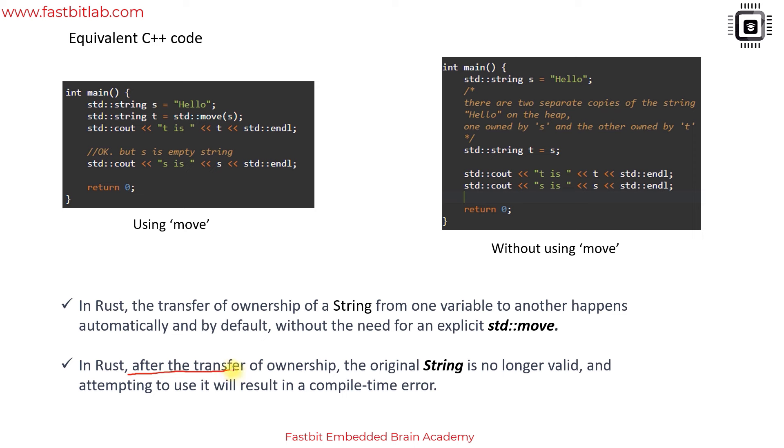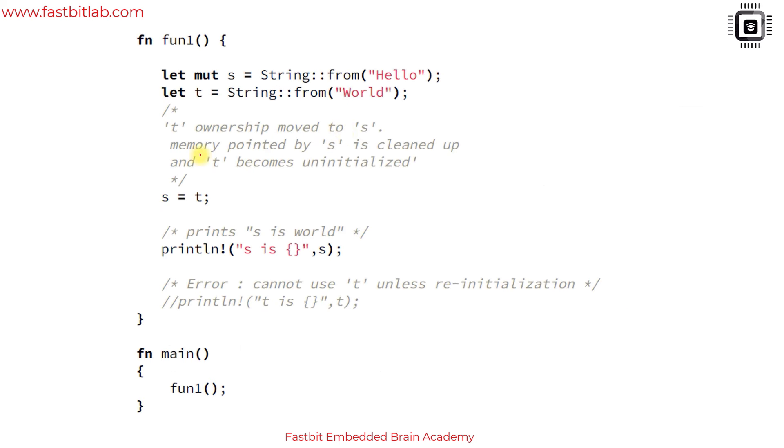In Rust you need not explicitly mention something called move or something like that, it happens by default. Please note that in this example Rust code after the transfer of ownership the original string, that is s in this case, is no longer valid and attempting to use it will result in a compile time error.